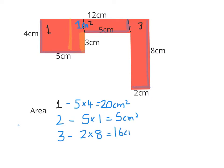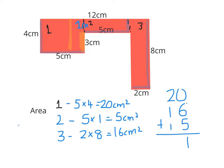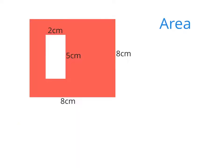Area three is 2 by 8, giving 16 centimeters squared. The overall area is found by adding the three sections: 20 plus 16 plus 5. Adding those up gives a total area of the shape of 41 centimeters squared.